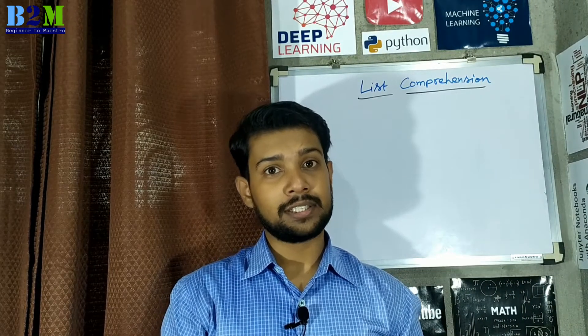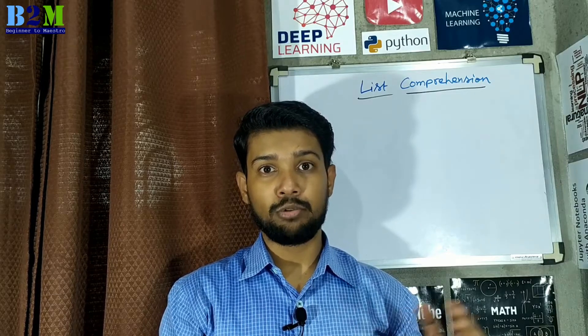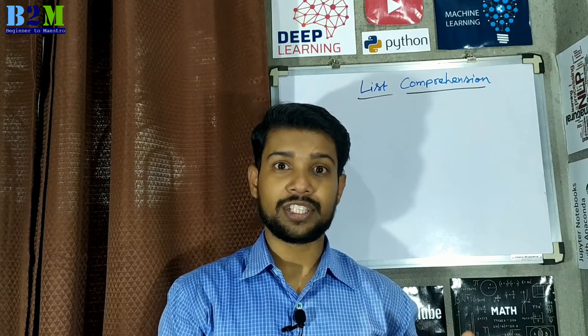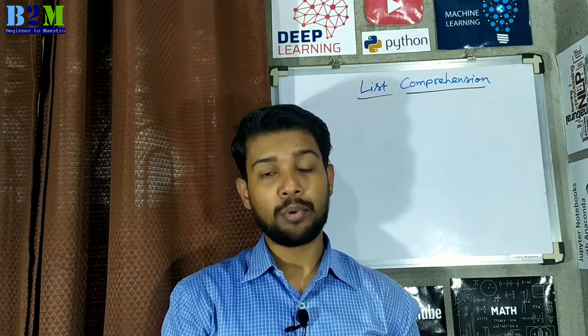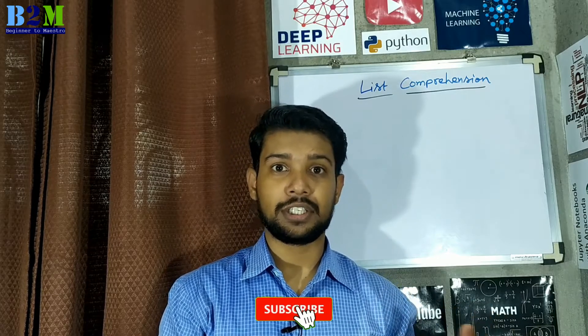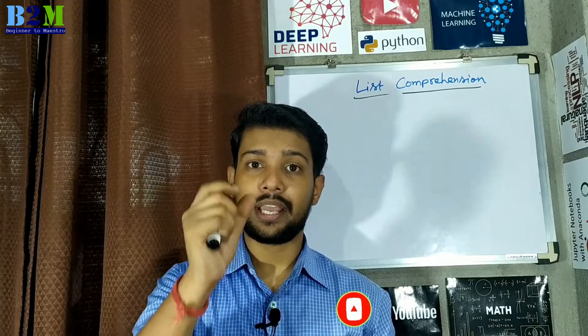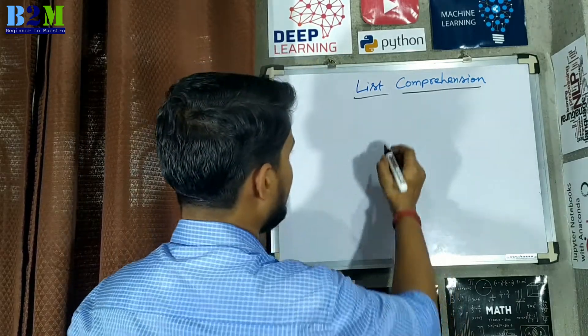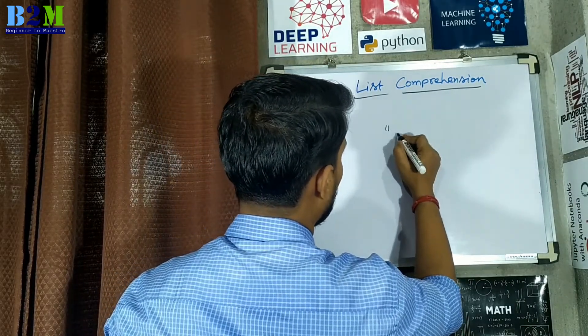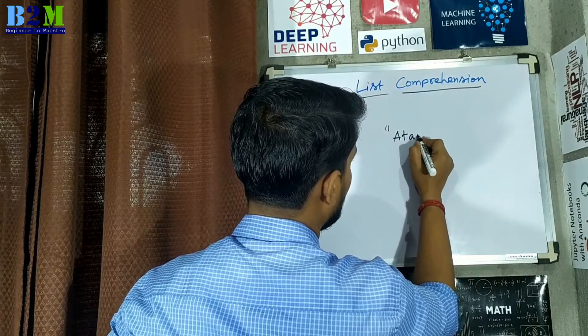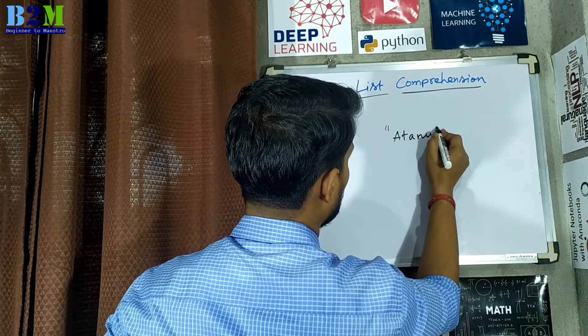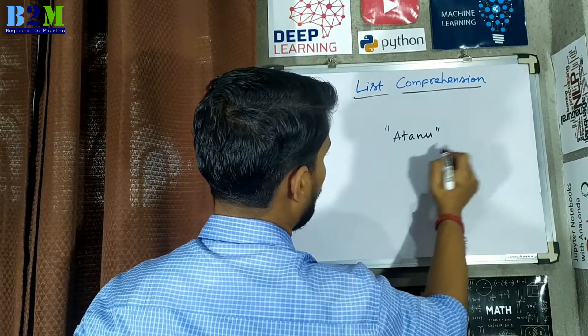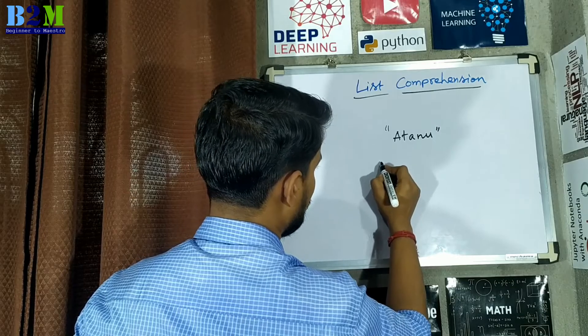List comprehension means reducing list creation time using a syntactical construct available in some programming languages, such as Python. For example, if you want to separate each letter of a word and store each letter in a list — say the word is my name, 'Atanu' — and you want to store each letter in a list.